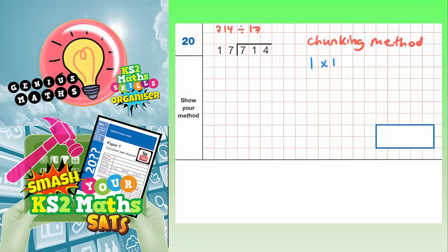So 1 lot of 17, 10 17s, 100 17s, 2 17s, 20 17s, 200 17s. And actually, the other useful one is going to be 5 17s. So what we're going to do first of all is work out these chunks.